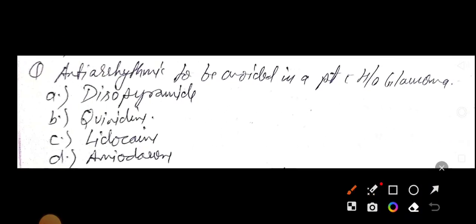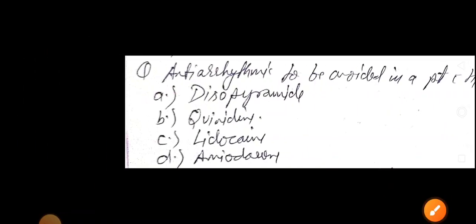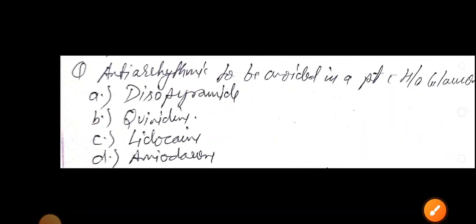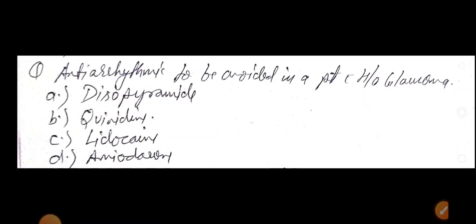Now, anti-arrhythmic to be avoided in patient with history of glaucoma. Very important. About anti-glaucoma drugs, I already explained on YouTube. Write anti-glaucoma drug MCQs by Dr. Heman Sharma. You find video. So answer, option A is disopyramid. Quinidine, lidocaine, amiodarone. So which drug you avoid? That is disopyramid. Avoid in case of history of glaucoma. So guys, hope till here it's very much clear.